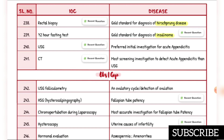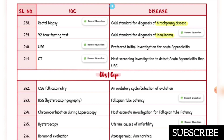OBGYN section: detection of ovulation — investigation of choice is ultrasound folliculometry. Fallopian tube patency: investigation of choice is HSG (hysterosalpingography). Most accurate investigation for fallopian tube patency is chromopertubation during laparoscopy. Uterine causes of infertility: investigation of choice is hysteroscopy. Investigation of choice for azoospermia or amenorrhea is hormonal evaluation.